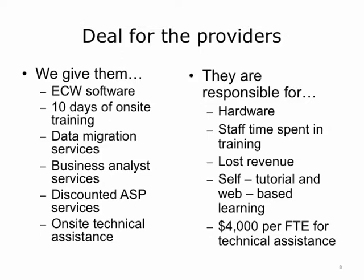What is the deal being offered to the providers? We give them a discounted rate on the eClinicalWorks software, 10 days of on-site training on how to use it, and help throughout the implementation process. However, to get this great deal, they have to contribute some of their own resources and money. The providers are responsible for purchasing the hardware, servers, network, and computers upon which the eClinicalWorks software will run. They are responsible for training themselves and their staff on how to use the EHR. Additionally, they contribute $4,000 per full-time employee (FTE) into a technical assistance fund that helps cover some of the costs for services provided through the Primary Care Information Project.